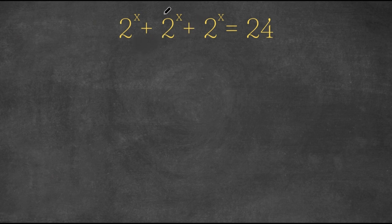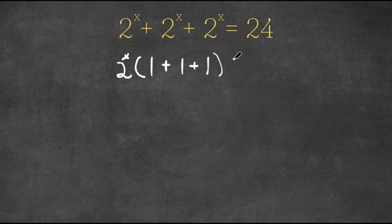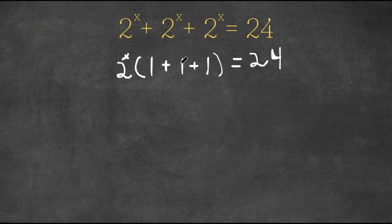What I'm first going to do is, from the left-hand side, because we have three terms that are the same, I'm going to factor out 2 to the power of x. So now we have 2 to the power of x times 1 plus 1 plus 1 is equal to 24. Adding what's in the parentheses, 1 plus 1 plus 1 gives us 3.